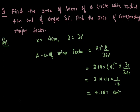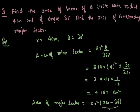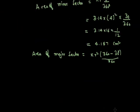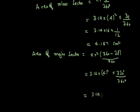This is the area of the minor sector. Now area of major sector = πr²(360 - 30)/360. So 3.14 multiplied by 16 multiplied by 11/12. We get 46.05 cm². This is the area of the major sector.